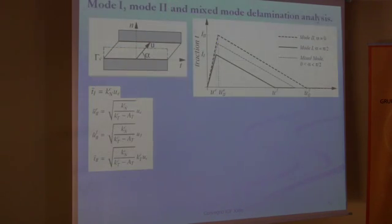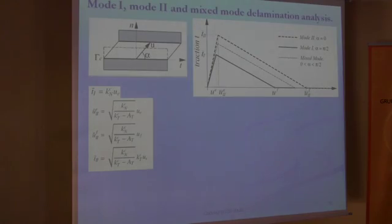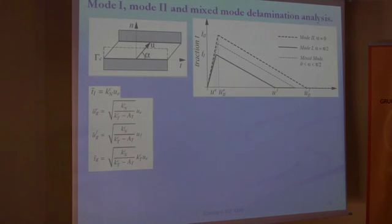The frictional plasticity evolution is governed by the classical Mohr-Coulomb yield function in non-associative plasticity theory, by defining a frictional coefficient and a dilatancy coefficient alpha. Also for the frictional plasticity, the plastic dissipation is always positive for any increment of the plastic parameter. The proposed model is very simple and it produces a bilinear response in a proportional loading path. In the present diagram, the pure mode 1, pure mode 2, and mixed mode bonding maximum traction, maximum elastic displacement, and final displacement are defined, with the difference between mode 1 and mode 2 defined by the parameter A_T.